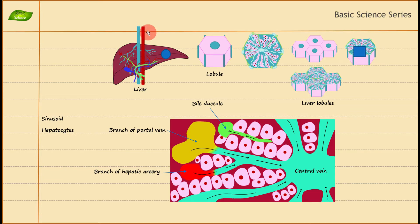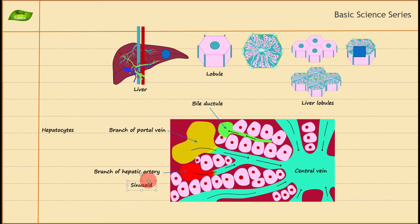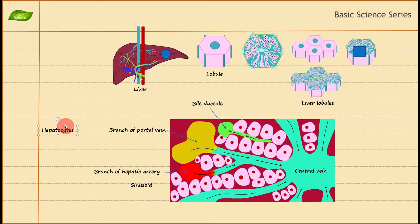Now let's move on to the liver sinusoid. The liver sinusoid is this region shown in green color. A sinusoid is a type of capillary—also called a sinusoidal capillary—and it has a discontinuous endothelium. Its role is to mix the blood coming from the portal system with the blood coming from the hepatic artery. The mixing happens in the sinusoidal region.